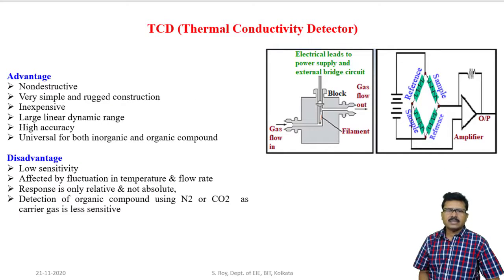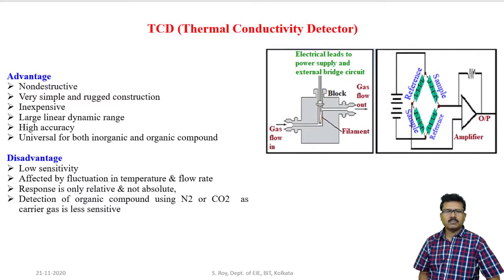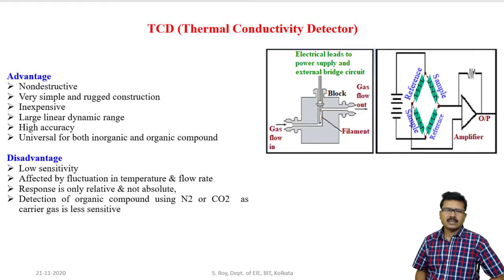Advantages of thermal conductivity detector: it is non-destructive in nature, meaning if we want to use the sample again for further analysis, we can collect it. It is very simple and rugged in construction. It is inexpensive. It gives linear output for a large range. It gives accurate results, and it is universal for both organic and inorganic compounds. Disadvantages: sensitivity is very low. Output is affected by variation in temperature and flow rate. It is very less sensitive if nitrogen and carbon dioxide are used as carrier gas.